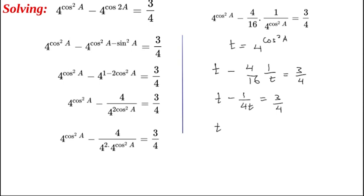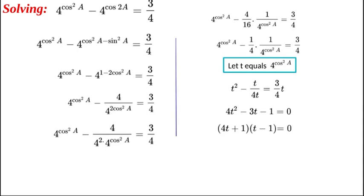Bring it all together now, and we'll get 4t² - 3t - 1 = 0. Now we can factor out the quadratic into two factors: (4t + 1)(t - 1) = 0.